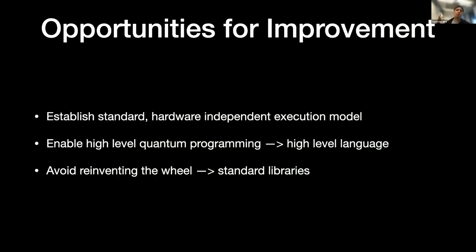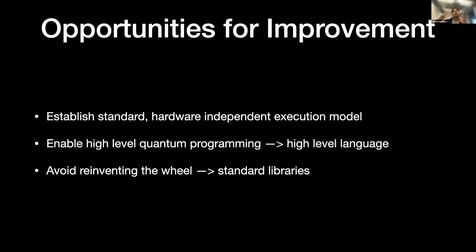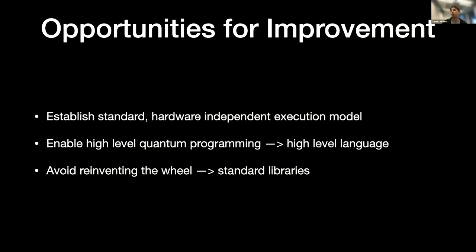Here are the main opportunities for improvement. First: we spend a lot of time arguing about what our execution model is. What is the machine we have in mind executing the algorithm? Not at the hardware level — not superconducting qubits or ions or photonics — but abstractly: is there a classical co-processor? What does it mean to assign a variable? What do you have to worry about regarding memory allocation and deallocation? There's a whole question mark around this where we simply don't have that execution model and are all hand-waving our way around it and coming up with different answers.